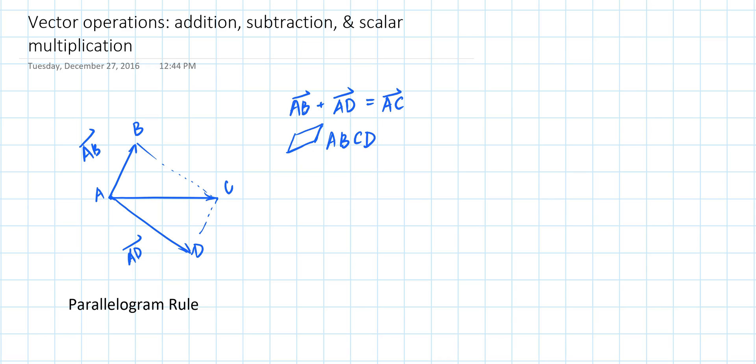Now if you look at parallelogram ABCD, you can notice that there are two pairs of equivalent vectors here. Vector AB is equivalent to vector DC because they have the same length and direction, and vector AD is equivalent to vector BC for the same reason.